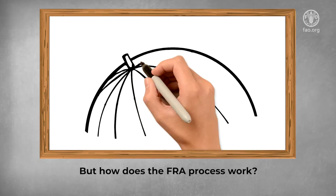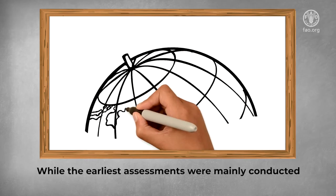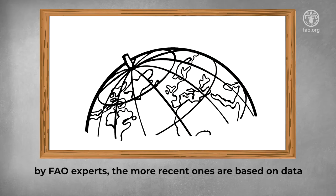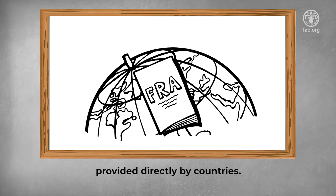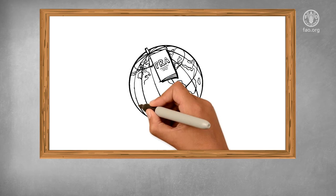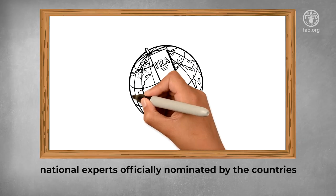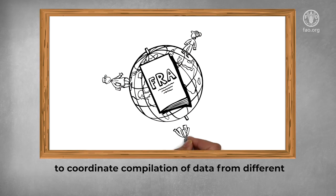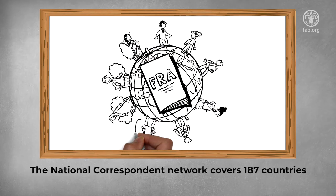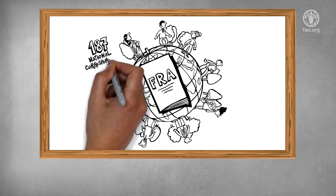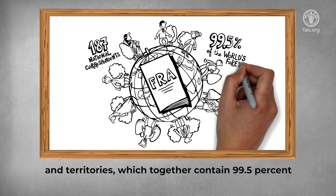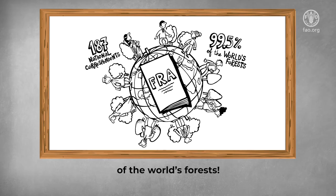But how does the FRA process work? While the earliest assessments were mainly conducted by FAO experts, the more recent ones are based on data provided directly by countries. These data are reported to FAO by national correspondents — national experts officially nominated by the countries to coordinate compilation of data from different national sources. The National Correspondent Network covers 187 countries and territories, which together contain 99.5% of the world's forests.